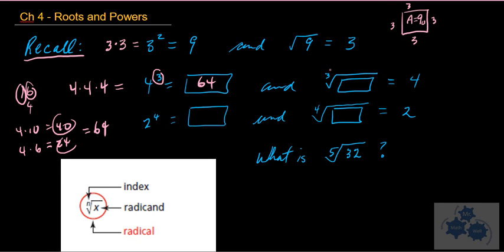The 3 in the index of the radical means it's a cube root, so the cube root of 64 is 4. We talked about a three-dimensional cube — if the volume is 64 cubic units, then the side length would have to be 4, and so would the height.